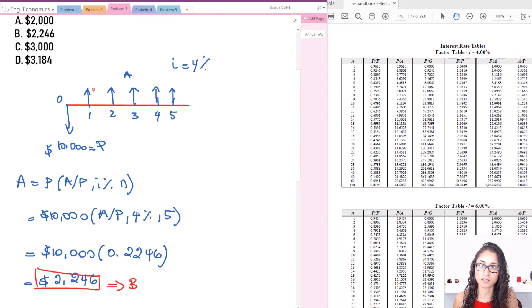And so this means that every year, you're going to make $2,246. That's exactly what it means. And then this year, you're going to make the same amount, and then here, and then here, and here.